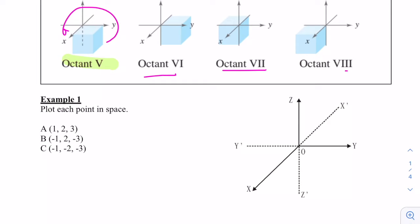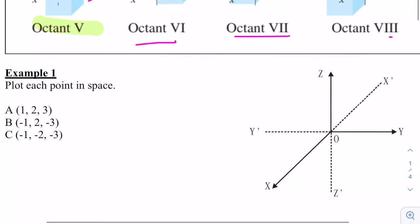Let's practice plotting the points in space. Point A will be coordinate (1, 2, 3). That's going to have an x value of one, two units on the y-axis, and three units on the z-axis. And it'll be about here.